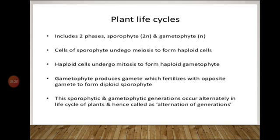That means, one time there will be a Sporophytic generation and after that a Gametophytic generation. From the Sporophyte, the Gametophyte is produced, and from the Gametophyte, Sporophytes are produced. Sporophyte gives rise to Gametophyte, and Gametophyte gives rise to Sporophyte, occurring alternately in the life cycle of a plant. This phenomenon is known as Alternation of Generations.